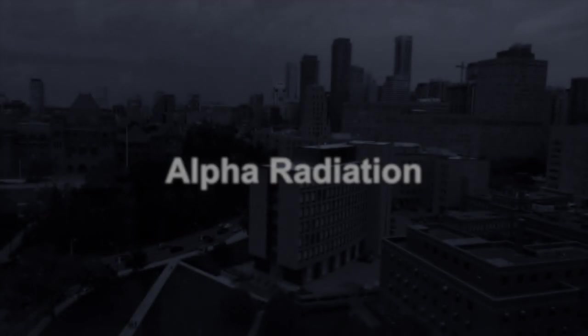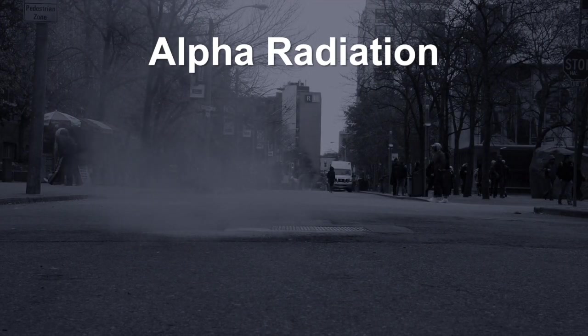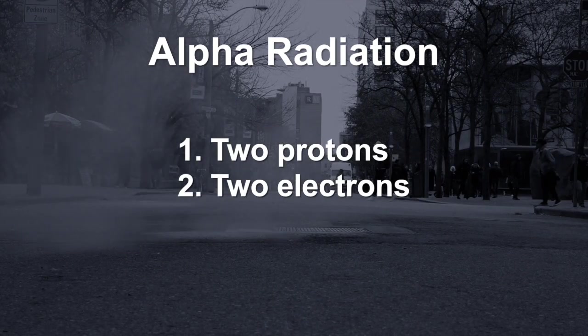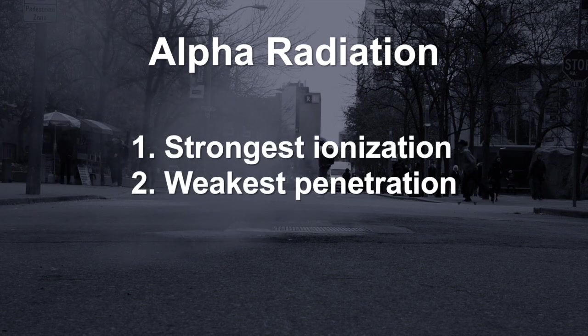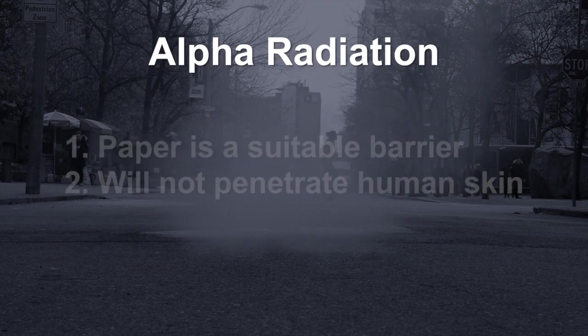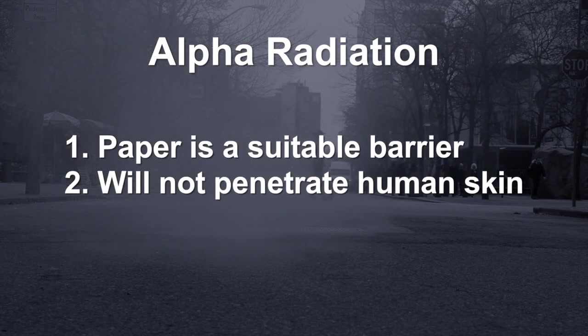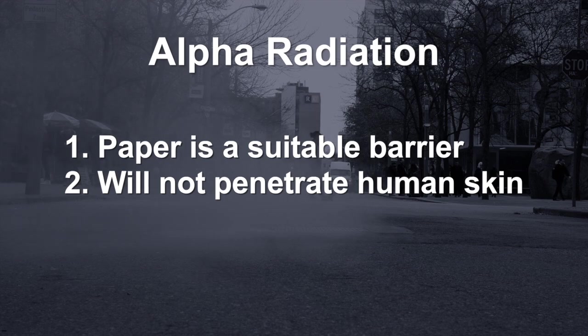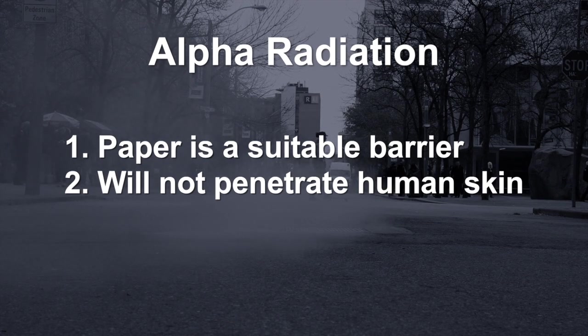Alpha radiation consists of two protons and two electrons and has the strongest ionization ability of the three but the weakest penetration. Paper can be used as a barrier against alpha radiation. Alpha rays will not penetrate human skin.